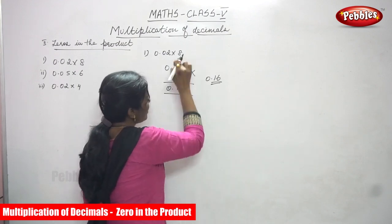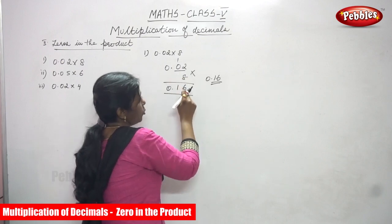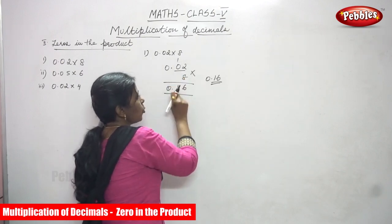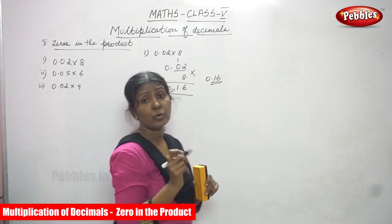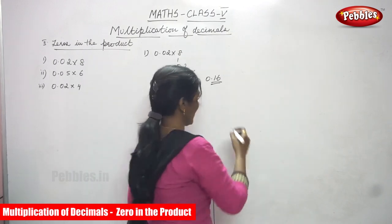6 carry over. The remaining goes to the 10th place value. So 8 into 0, 0. 0 plus 1, 1. So answer is 0.16. This is the right answer for this question.